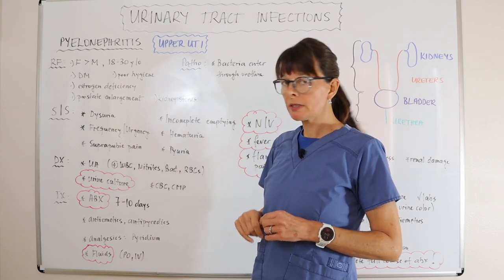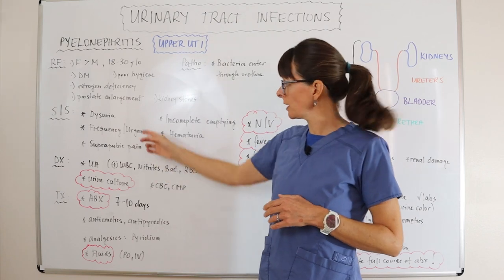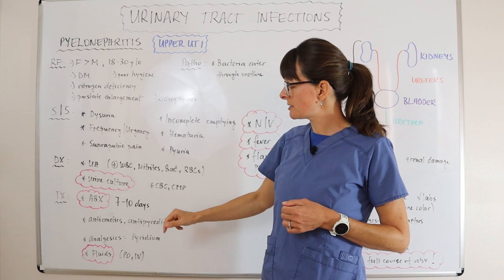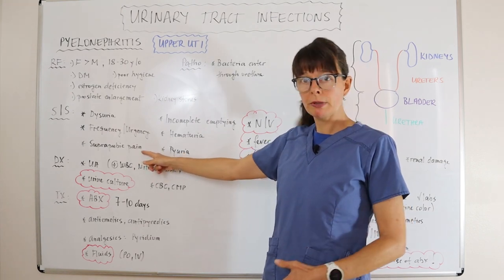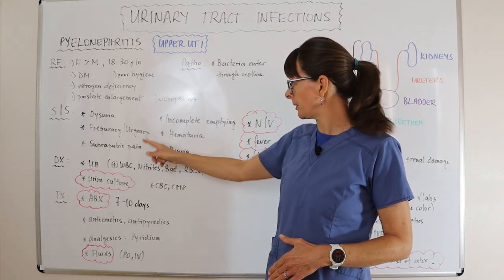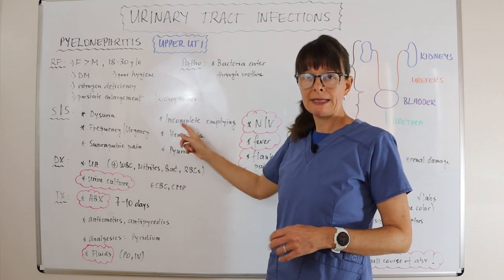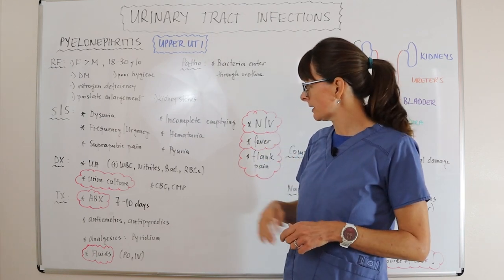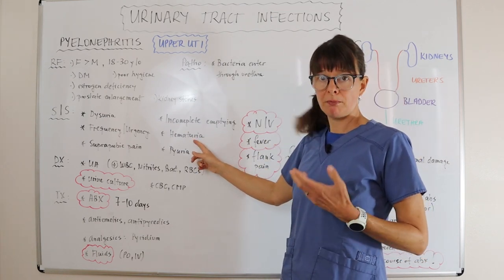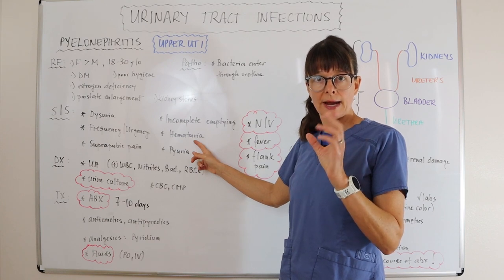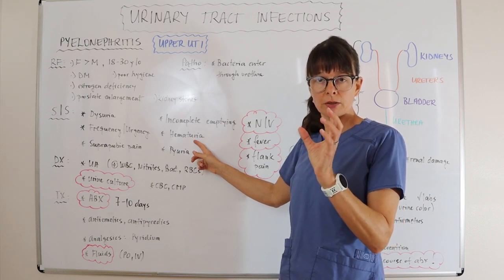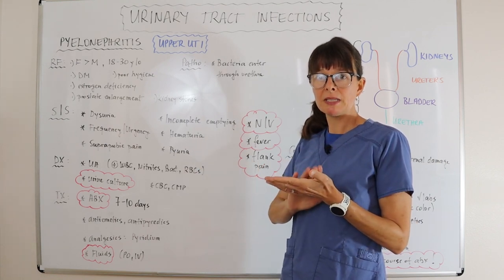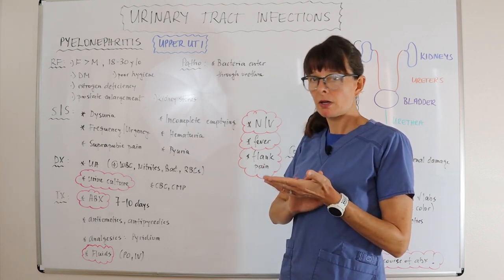Signs and symptoms of urinary tract infections in general usually include dysuria — painful urination — as well as urgency and frequency, and then suprapubic pain, usually if the infection is contained to the bladder. There can be some incomplete emptying because of the irritation that bacteria causes in the urinary tract. There can be hematuria, blood in the urine, whether that's visible with the naked eye — meaning bright red blood, also called gross hematuria — or just microscopic, being seen on the urinalysis.